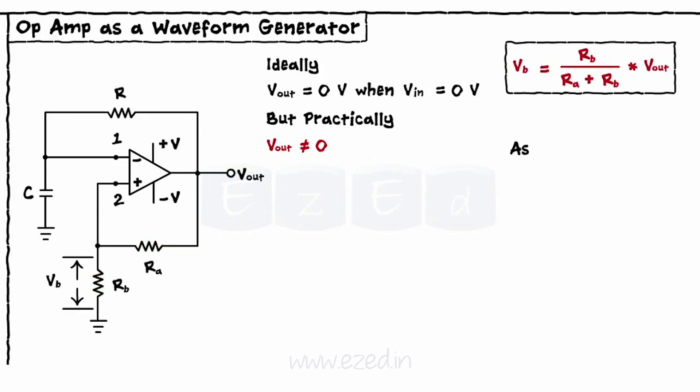RA and RB form a voltage divider network. Thus, if initial V out is non-zero, we get voltage across VB also as non-zero. Thus, we get a positive input at the non-inverting and inverting terminals, and the output gets amplified by its gain.